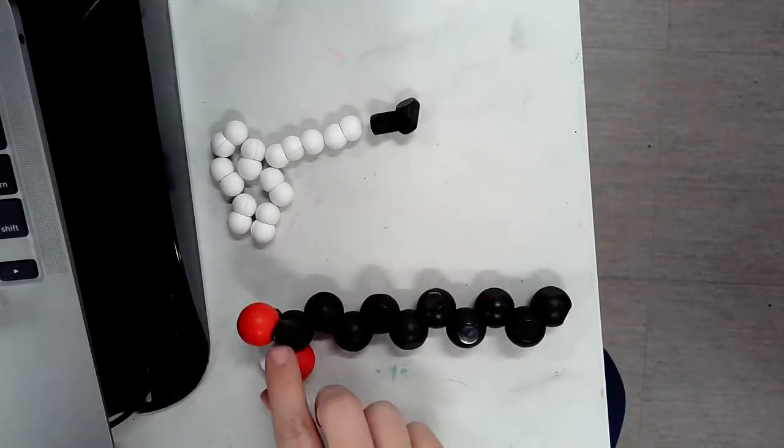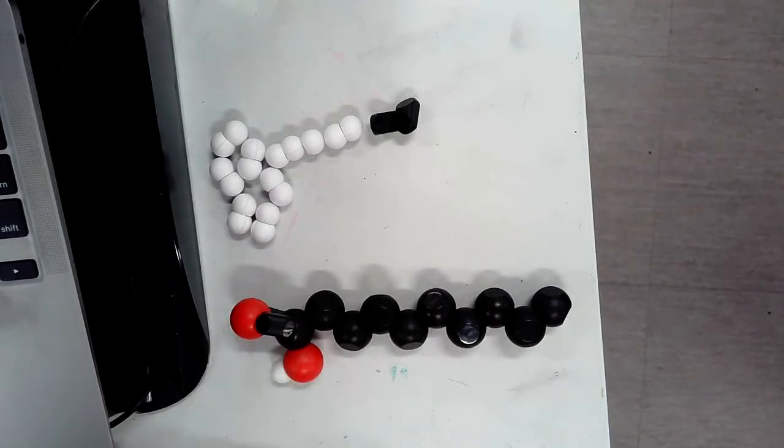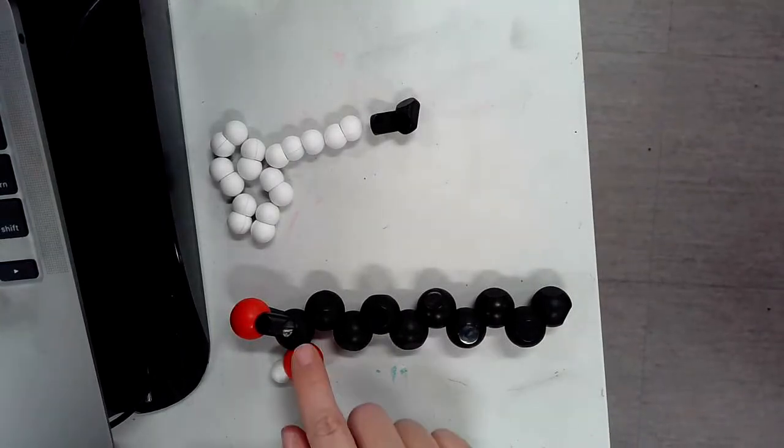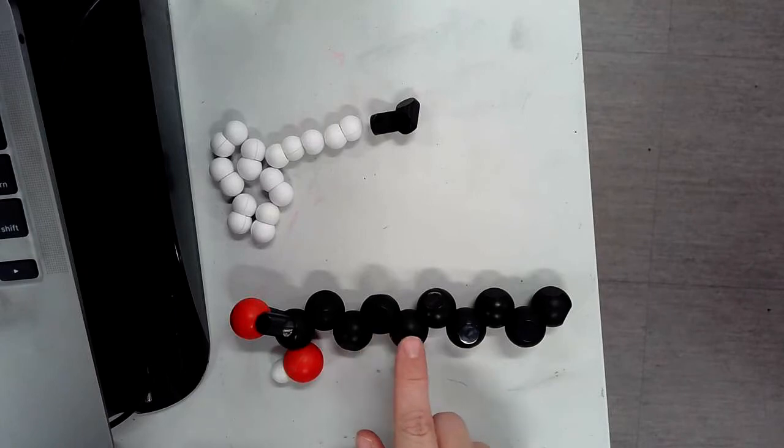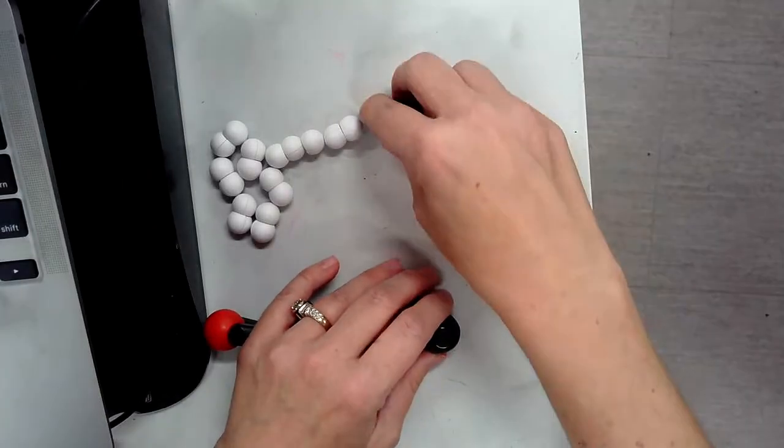Like so. Okay, so in summary off of carbon number one we have an O and an H and a double bonded oxygen. Now we're going to go to carbon number seven. So carbon one, two, three, four, five, six, seven. Between carbon seven and eight we're going to add a double bond.